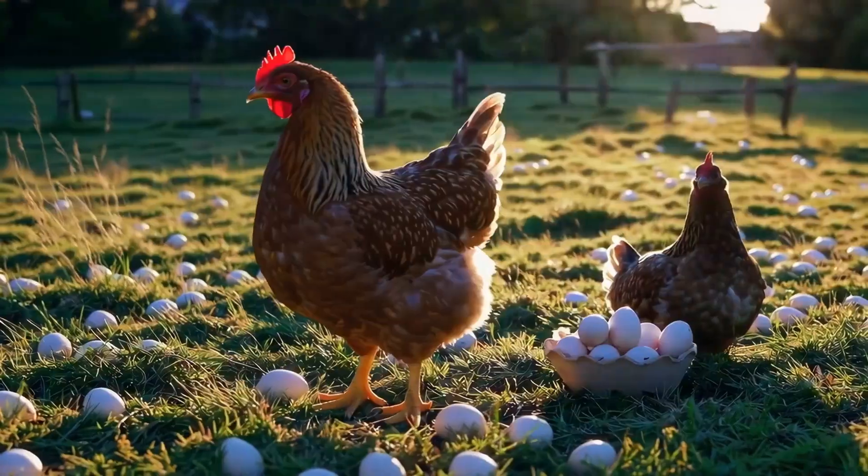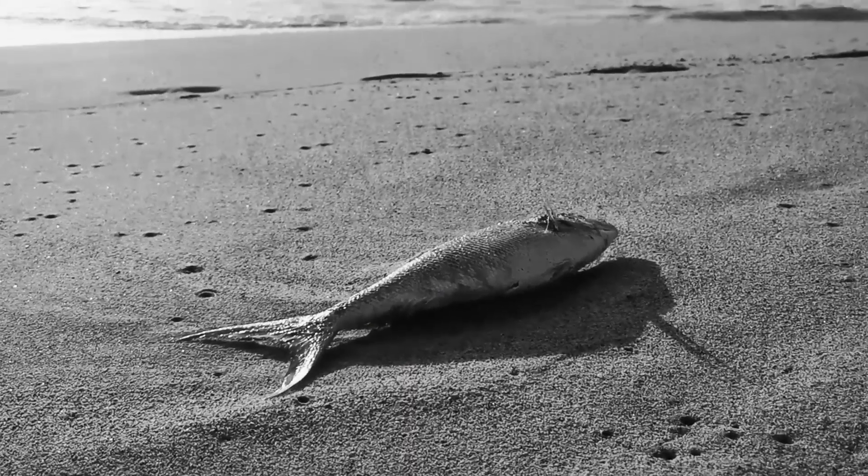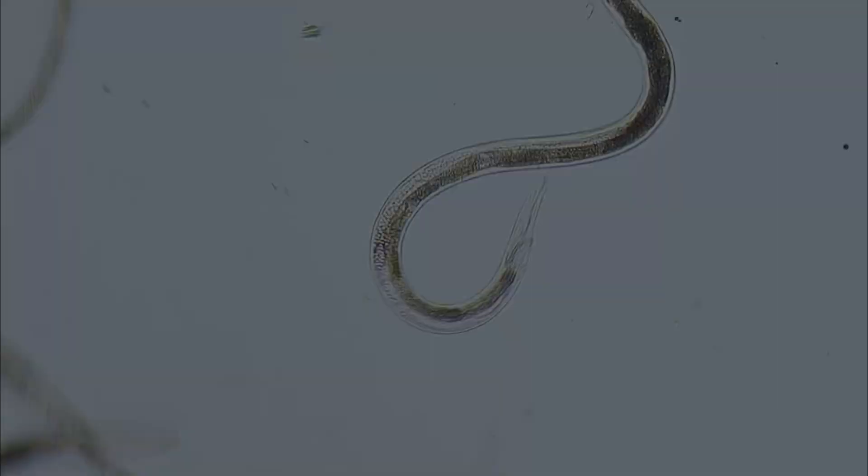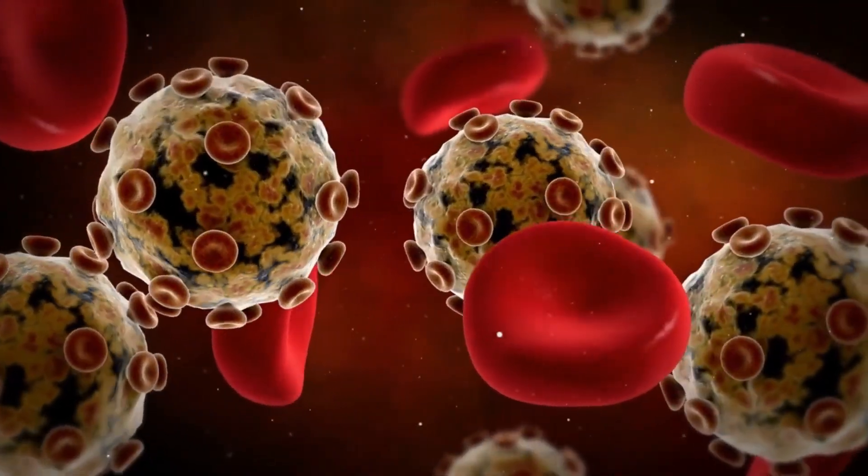They quietly control how fast animals grow, when they reproduce, and in some cases, how long they live. If one species grows too dominant, a parasite outbreak can bring balance back without any claws, teeth, or loud battles.